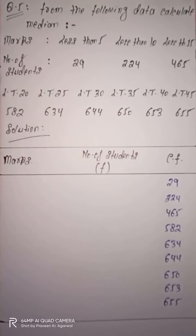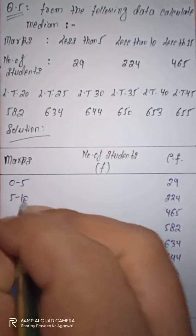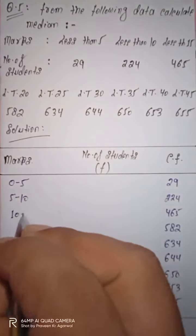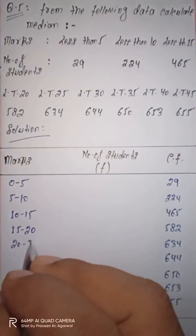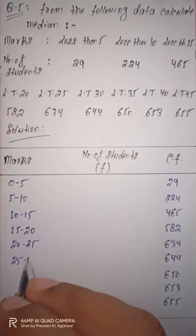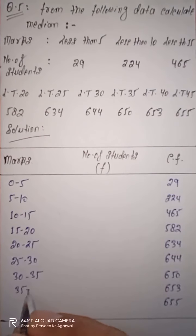This less-than data is essentially the cumulative frequency directly. The class interval difference is 5. So if less than 5 corresponds to class 0–5, then less than 10 corresponds to class 5–10, less than 15 to 10–15, less than 20 to 15–20, less than 25 to 20–25, less than 30 to 25–30, less than 35 to 30–35, less than 40 to 35–40, and less than 45 to 40–45.